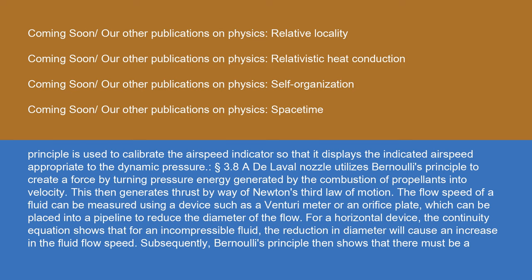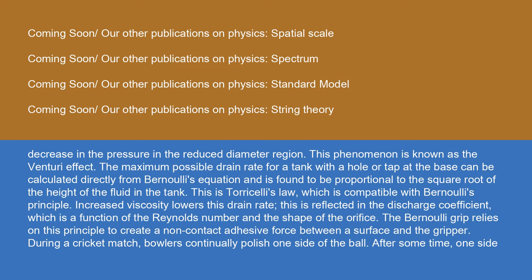The de Laval nozzle utilizes Bernoulli's principle to create a force by turning pressure energy generated by the combustion of propellants into velocity, which then generates thrust by way of Newton's third law of motion. The flow speed of a fluid can be measured using a device such as a venturi meter or an orifice plate, which can be placed into a pipeline to reduce the diameter of the flow. For a horizontal device, the continuity equation shows that for an incompressible fluid, the reduction in diameter will cause an increase in the fluid flow speed, and subsequently Bernoulli's principle shows that there must be a decrease in the pressure in the reduced diameter region — this phenomenon is known as the venturi effect.